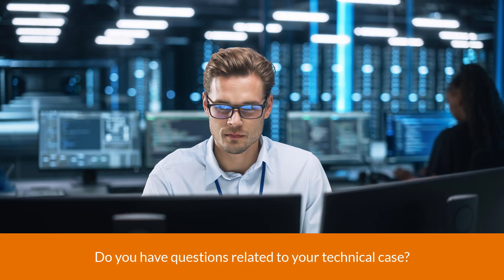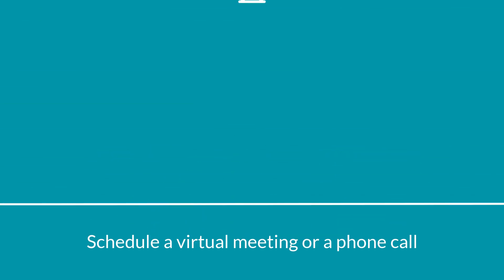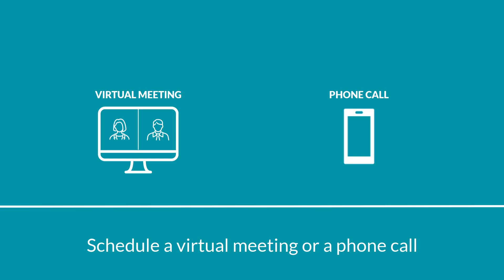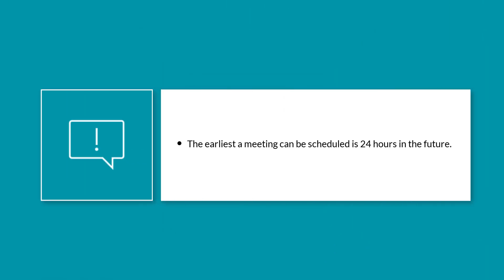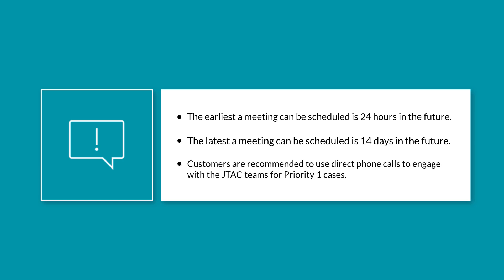Do you have questions related to your technical case? The Juniper Support Portal can help you request a meeting with the Juniper Networks Technical Assistance Center, or JTAC, to resolve your queries. As a customer, you can schedule a virtual meeting or a phone call based on your preferred date and time and the JTAC engineer's availability. Note that the earliest a meeting can be scheduled is 24 hours in the future, and the latest it can be scheduled is 14 days in the future. Customers are recommended to use direct phone calls to engage with the JTAC teams for priority one cases.